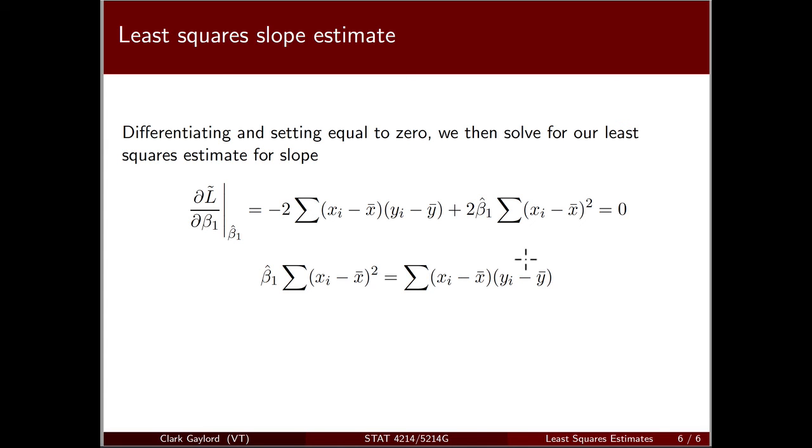Simplifying and rearranging, we want to isolate beta1 hat, so we divide through. We call this cross product term sxy. It has x terms and y terms summed together by their product. And sxx is the sum of xi minus x bar squared. Notice the similarity to sample variance: the sample variance of x's is sum of xi minus x bar squared divided by n minus 1.